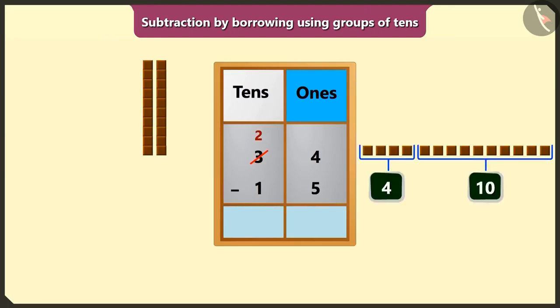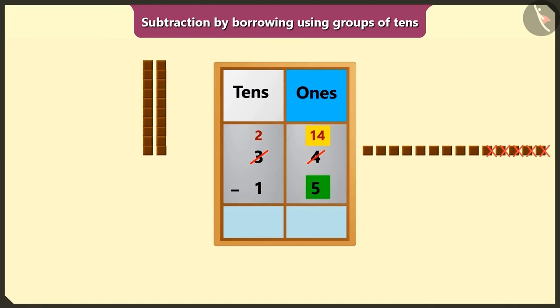Now if we subtract 5 ones from 14 ones, then we would have 9 ones left. So we will write 9 in the box of ones.